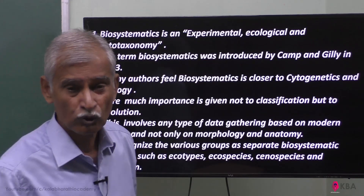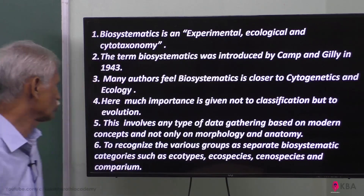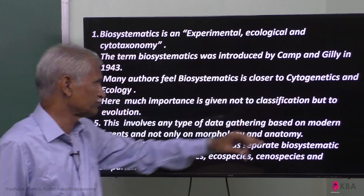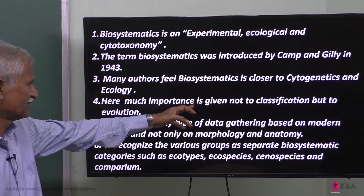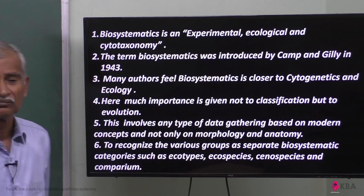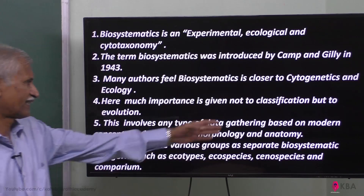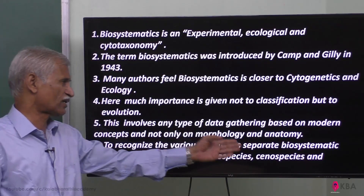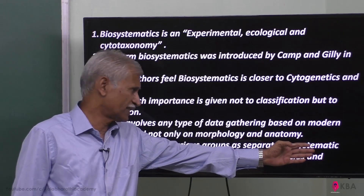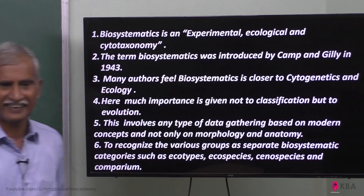Biosystematics is closely related to evolution, not very closely to classification. Many authors feel biosystematics is closer to cytogenetics and ecology. Much importance is given not to classification but to evolution. It takes into account any type of data gathered based on modern concepts — not only morphology and anatomy, but also ecological systems. Ecotypes, eco-species, and senospecies are connected to it.